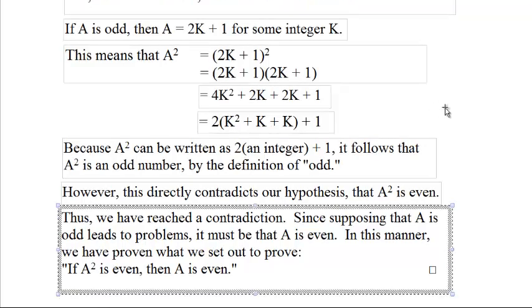Since supposing that a was odd led to problems, it must be that a is even. And in this manner, we have proven what we set out to prove, that if a squared is even, then a has to be an even number. Because if a is odd, that will lead to problems.